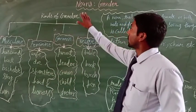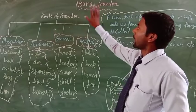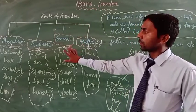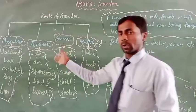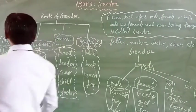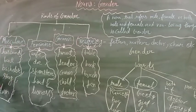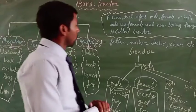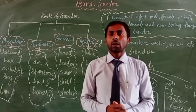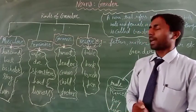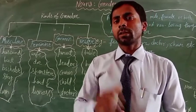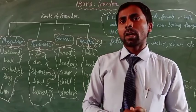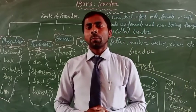I hope everyone understands gender and its kinds — divided into four parts — and how to define each type. You should complete your whole exercise from the book. If you have any confusion, please comment in the comment box. Thank you for watching. Best of luck!